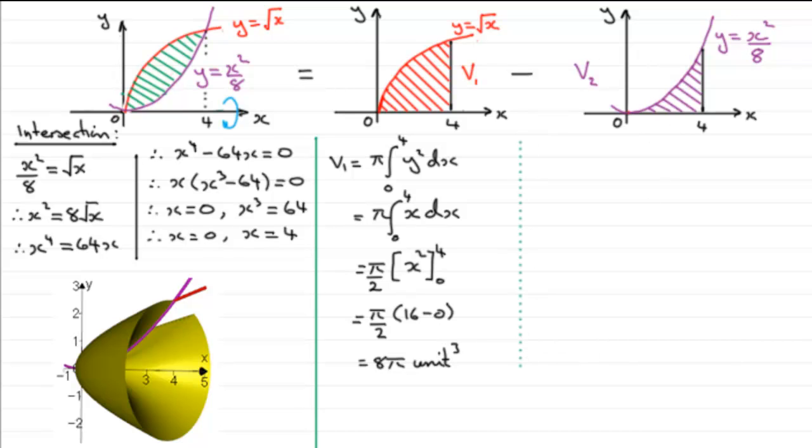Okay so what we need to do now is work out our next volume v2. So for v2 going to be much the same kind of idea. Pi times the integral going from 0 to 4 then of y squared with respect to x. Our standard formula for working out volume of revolution about the x axis.